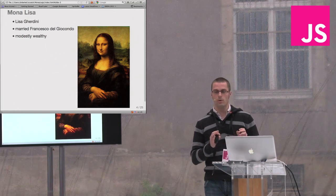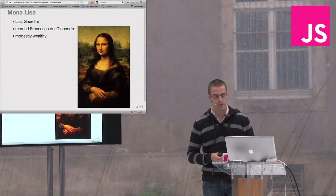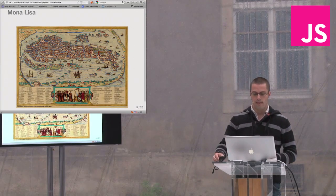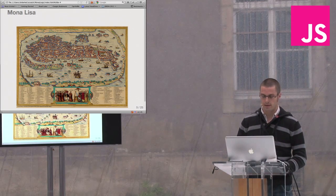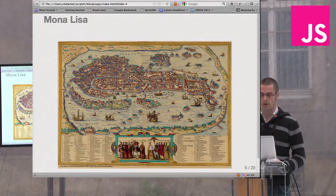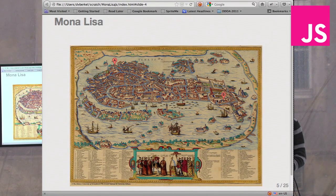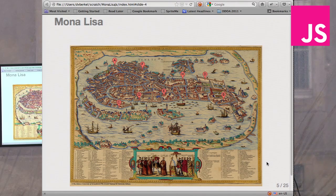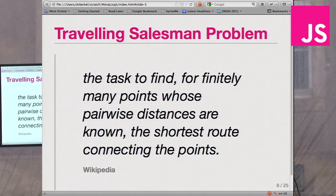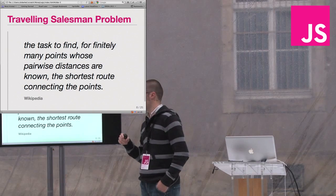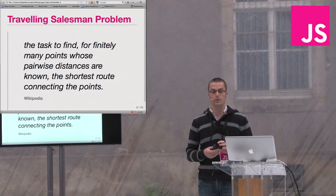But if you are modestly wealthy, you have to look at the expenses you have. So that's why the following problem comes in. This is Venice — not France. Let's say that Lisa has to go and talk to a lot of merchants and salesmen, and has to travel through Venice through all these places. Some are interested buyers, some are sellers of silk. The question is: if you have to visit all these points, what is the most efficient route? That's basically called the traveling salesman problem.